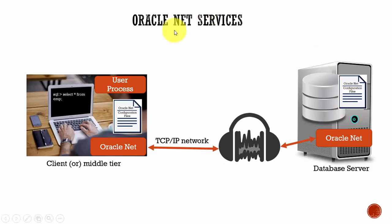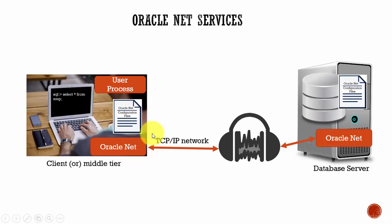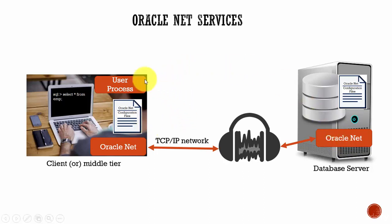To establish a connection from the client to the database server, we need some kind of a service running. That service is called Oracle Net. This Oracle Net service will be running both on the client machine and on the database server machine. On the client machine, this Oracle Net service is a background process running. Whereas on the database server, Oracle Net is an active service which has a process called Oracle Net Listener. This listener is responsible for coordinating the connections between the database and the external applications running from the client machine.